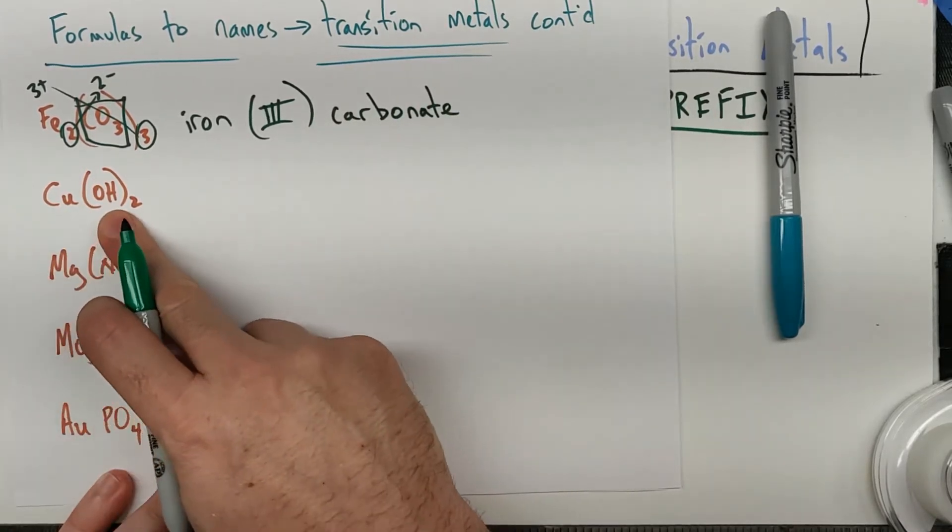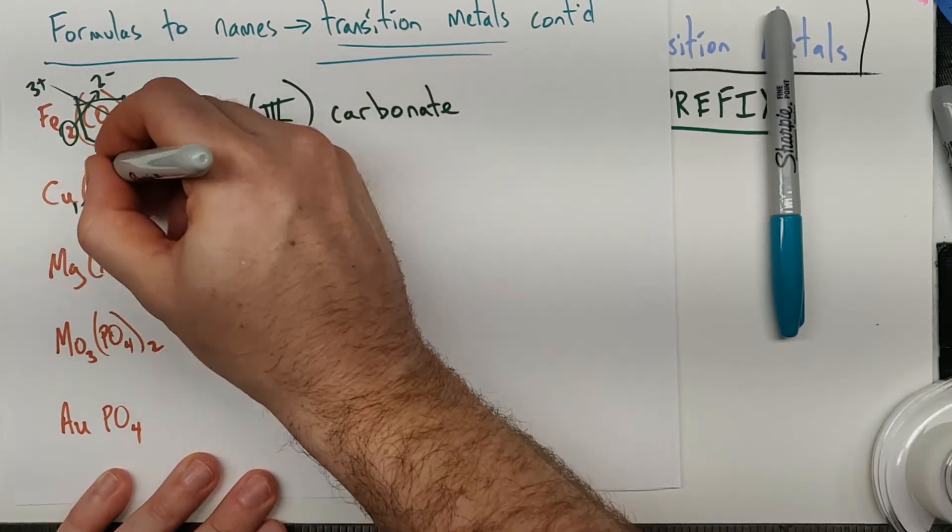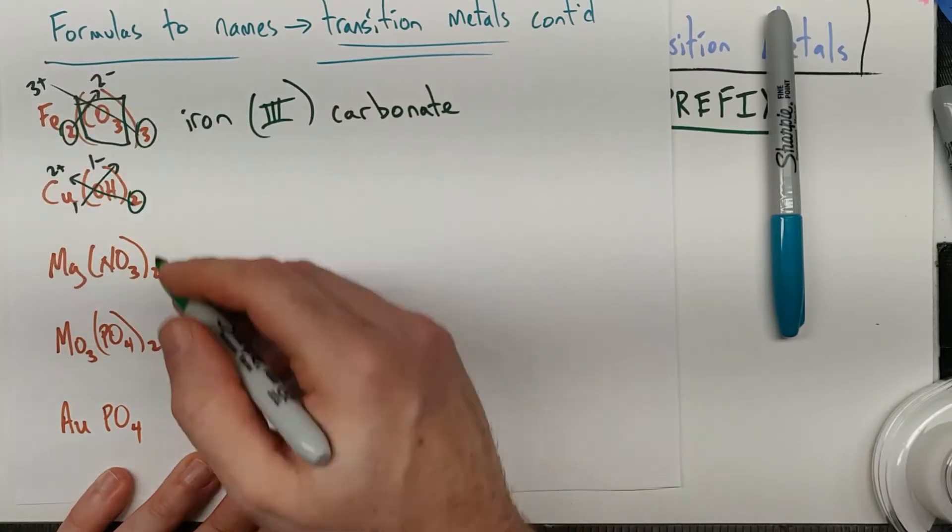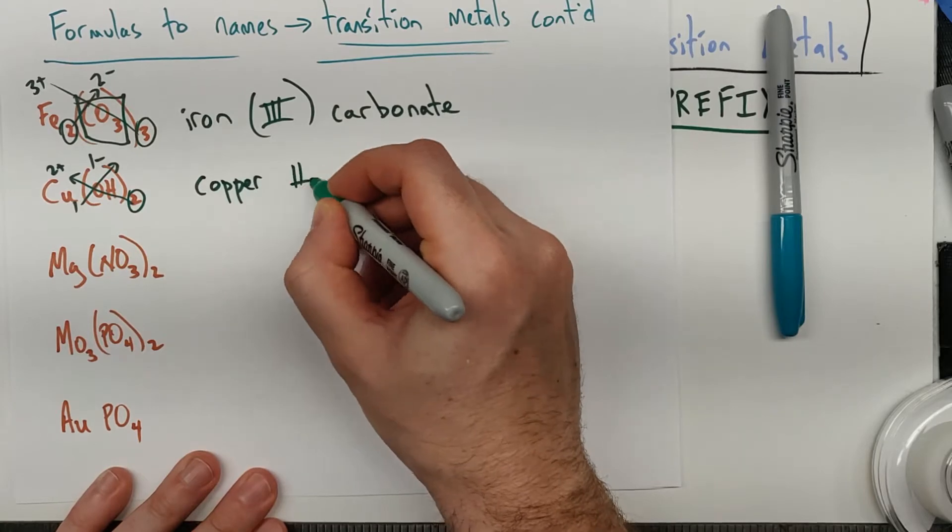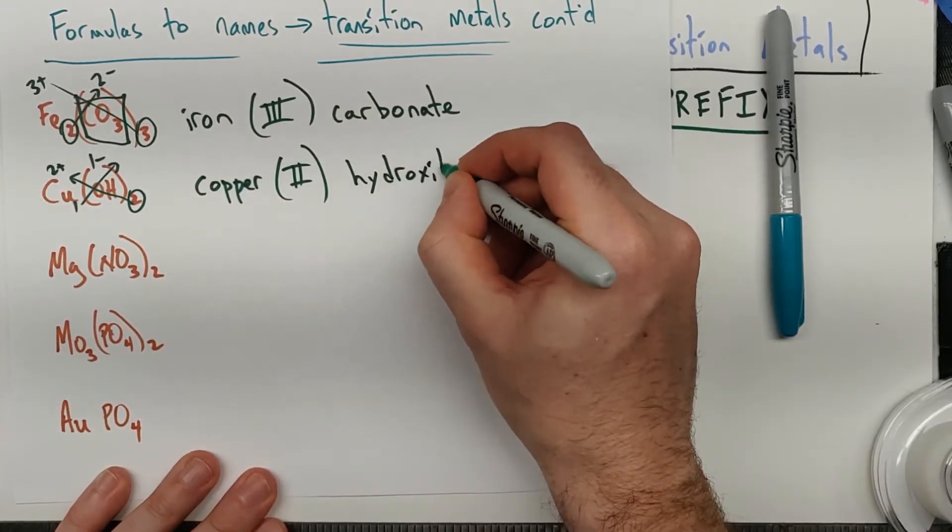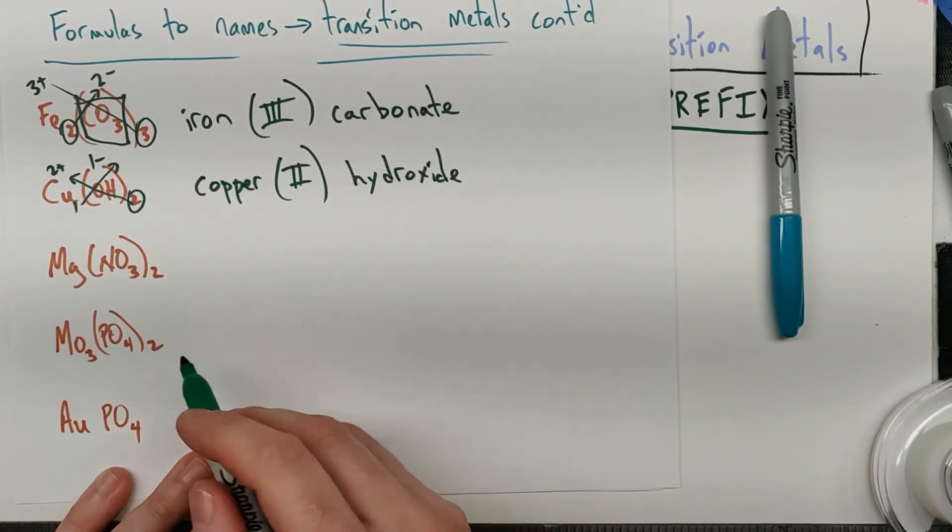Copper and hydroxide. Once again, I'm expecting hydroxide to be a 1 minus. And when I uncrisscross here, I'll have 1 minus and 2 plus. So we can call it, like we see it, copper hydroxide. Again, with this Roman numeral reflecting the oxidation state of that.